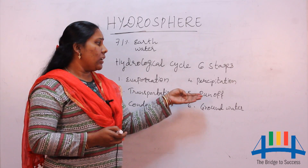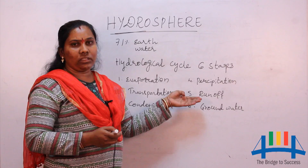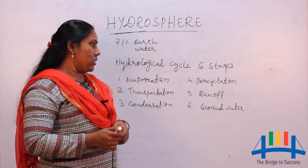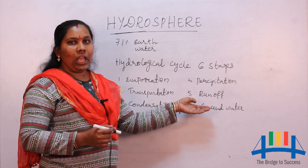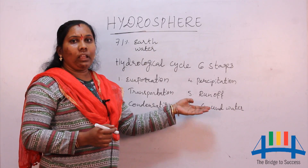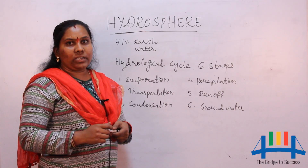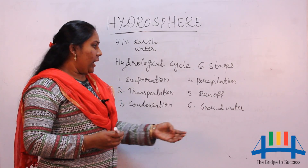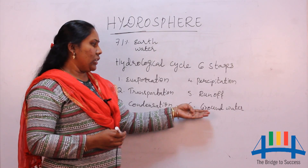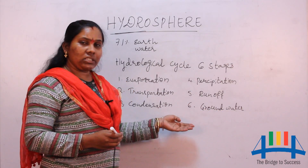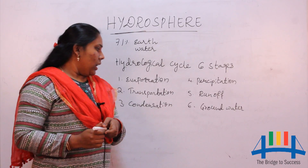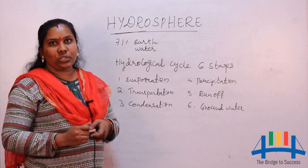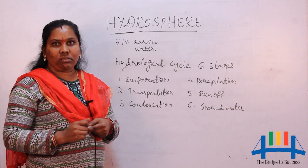The water reaching the Earth flows from high-level areas like hills to low-level areas — that flow is called runoff. In the process of runoff, water percolates into the ground. That percolated water converts into groundwater, which is the sixth stage of the water cycle. Apart from this, there are water sources which we will discuss in a later class.